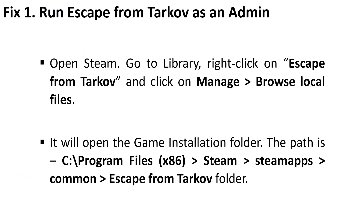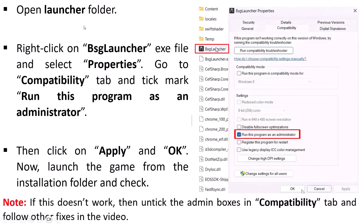The first fix is to run Escape from Tarkov as an admin. Open Steam, go to Library, right-click on the Escape from Tarkov game, select Manage, and then click Browse Local Files. It will take you to the game installation folder. The path is C drive → Program Files (x86) → Steam → Steamapps → Common → Escape from Tarkov. Open the Launcher folder, right-click on the BSG Launcher exe file, select Properties, go to the Compatibility tab, and tick mark Run this program as an administrator. Then hit Apply and OK, and launch the BSG Launcher — your error should be fixed.